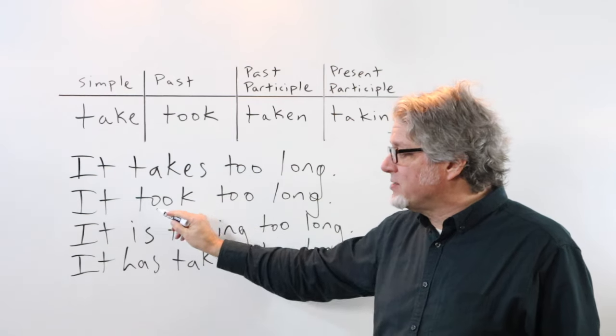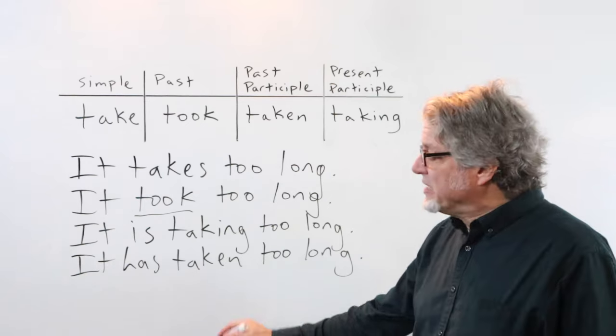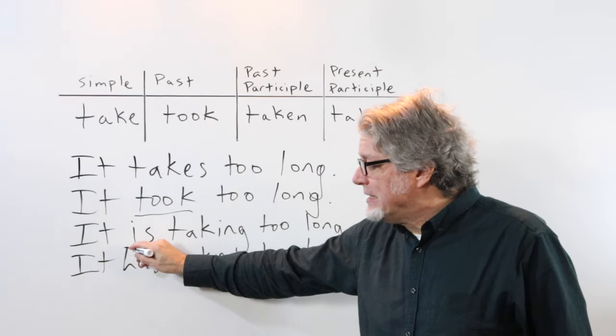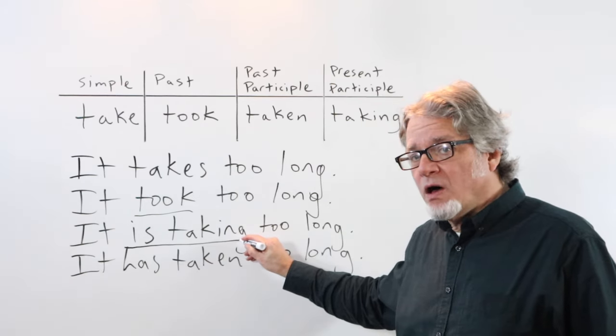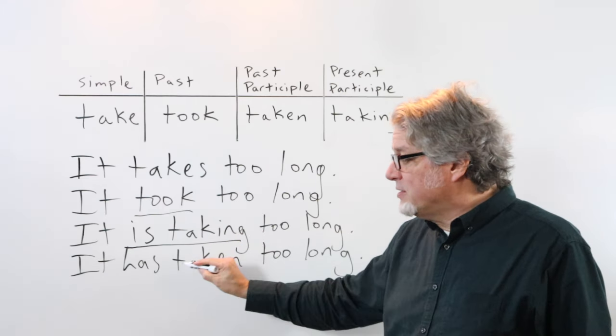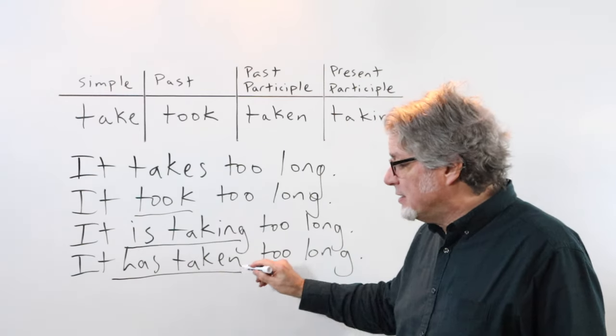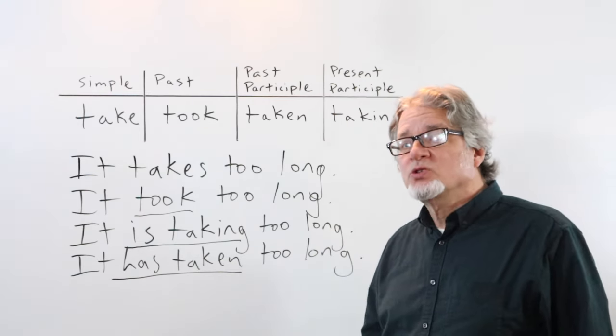In the past tense, it took too long. In the present continuous tense, it is taking too long. This is something that's happening right now. And this is in the present perfect tense. This is also happening now. It has taken too long.